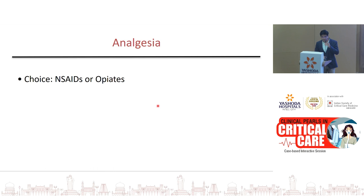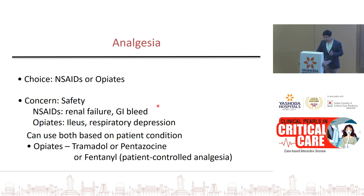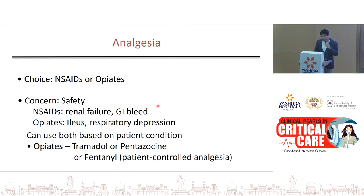The most important thing for patient comfort is analgesia. Safety concerns: NSAIDs carry risk of renal failure and peptic ulcers; opioids carry risk of ileus and respiratory depression. Choose based on clinical condition — if a patient has respiratory failure and is not intubated, avoid opioids and use NSAIDs; if there is AKI, use opioids. Patient-controlled analgesia pumps are preferable and require lower doses than nurse-administered analgesia.